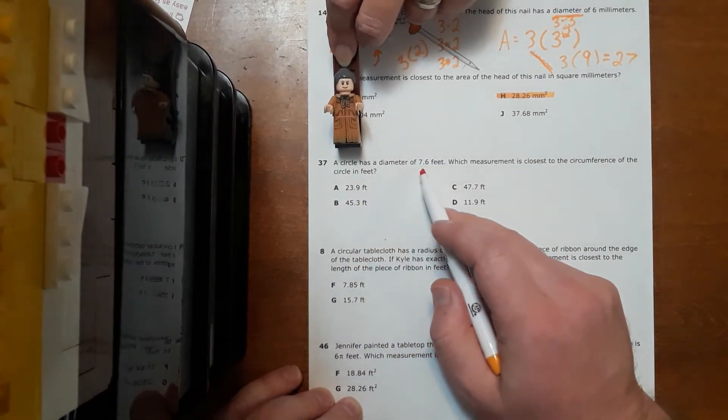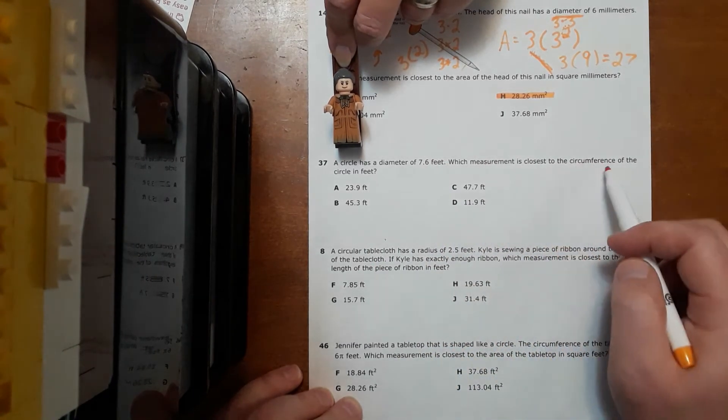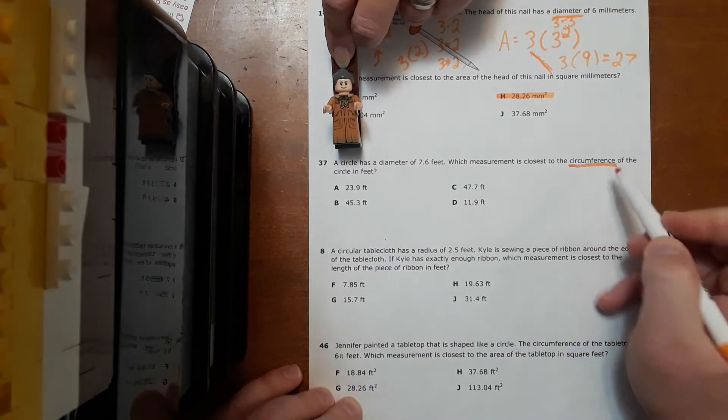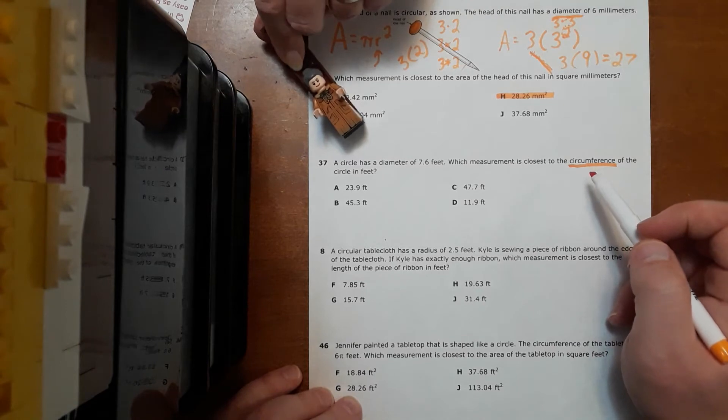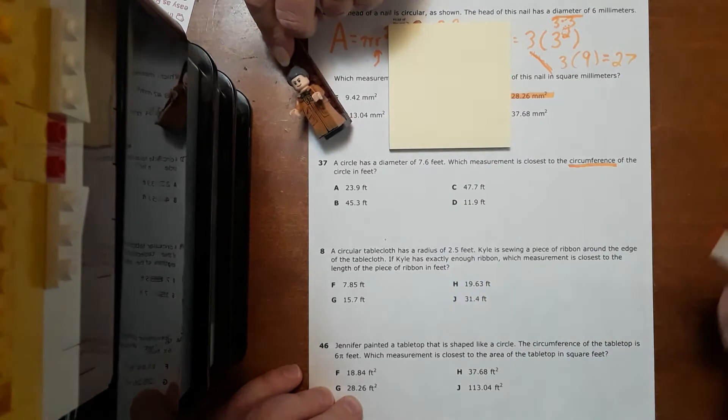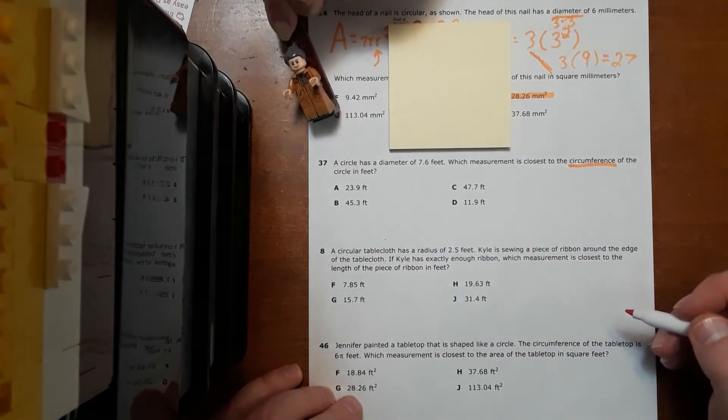A circle has a diameter of 7.6 feet. Which measurement is closest to the circumference of the circle in feet? So we're not looking for area. Now we're looking for circumference. That's not quite as easy, because there's a couple different options for circumference. And I suppose I won't make you write upside down, Mother. Go ahead and write right side up on there. Which of those formulas for circumference do you think we should use?